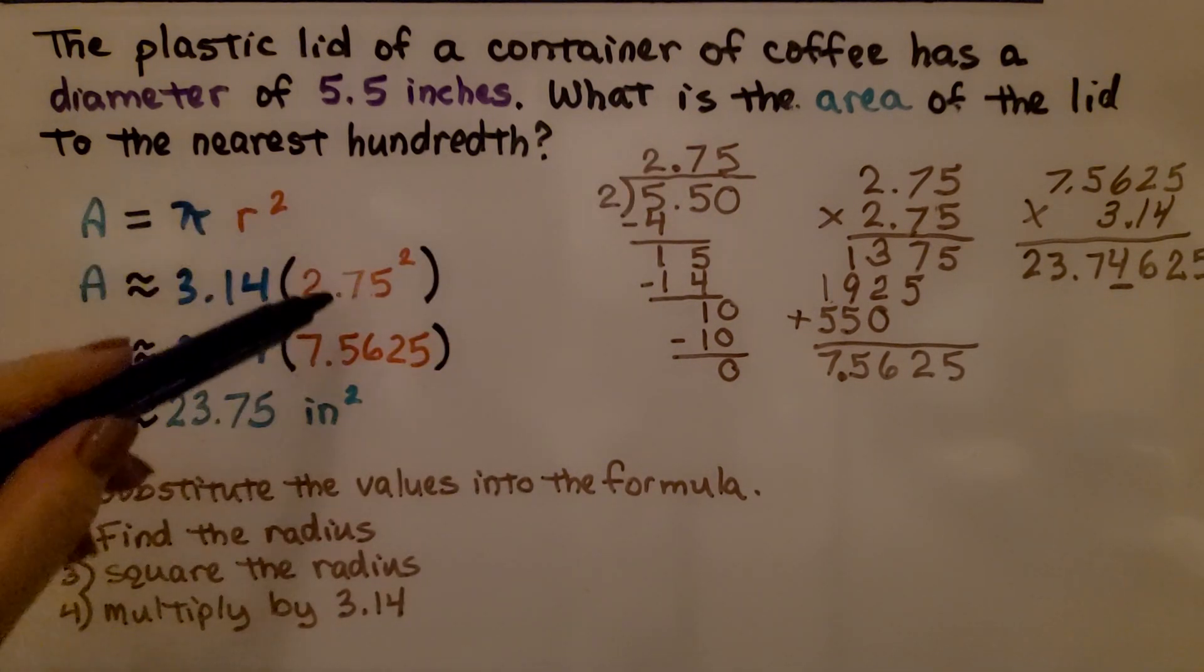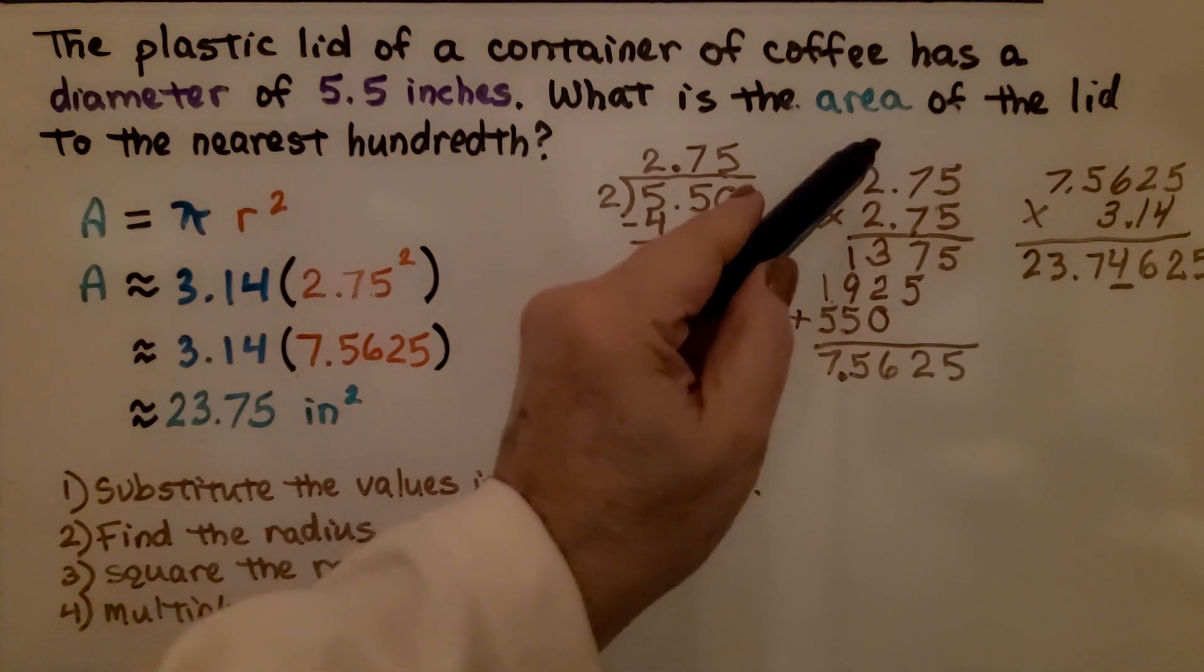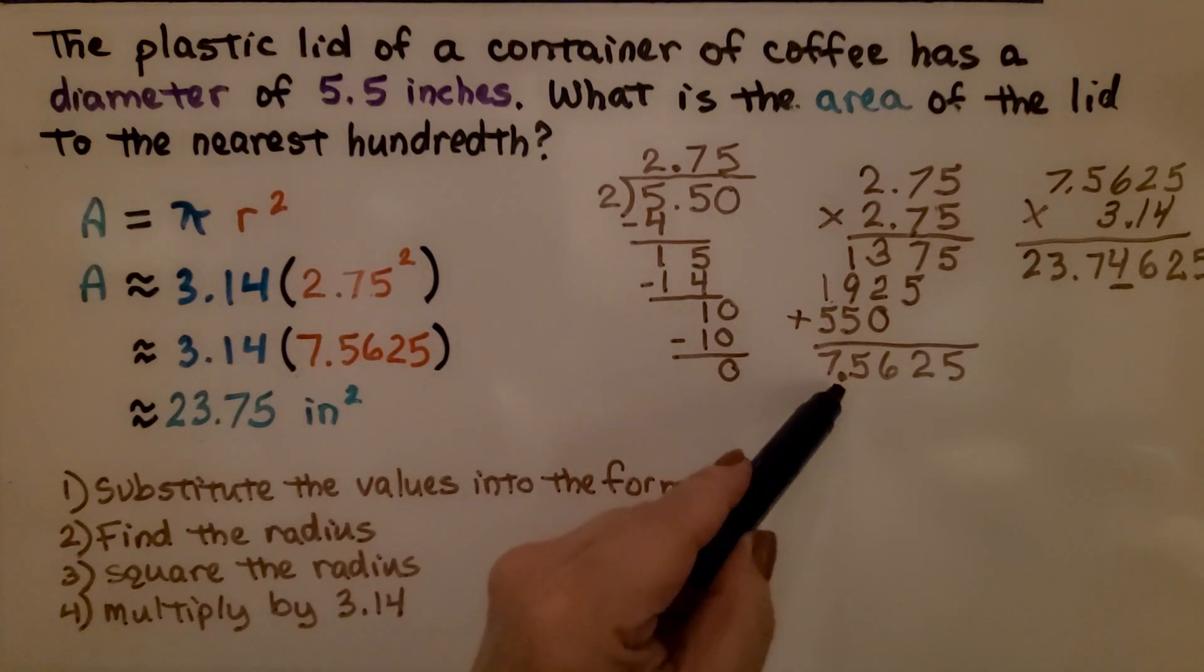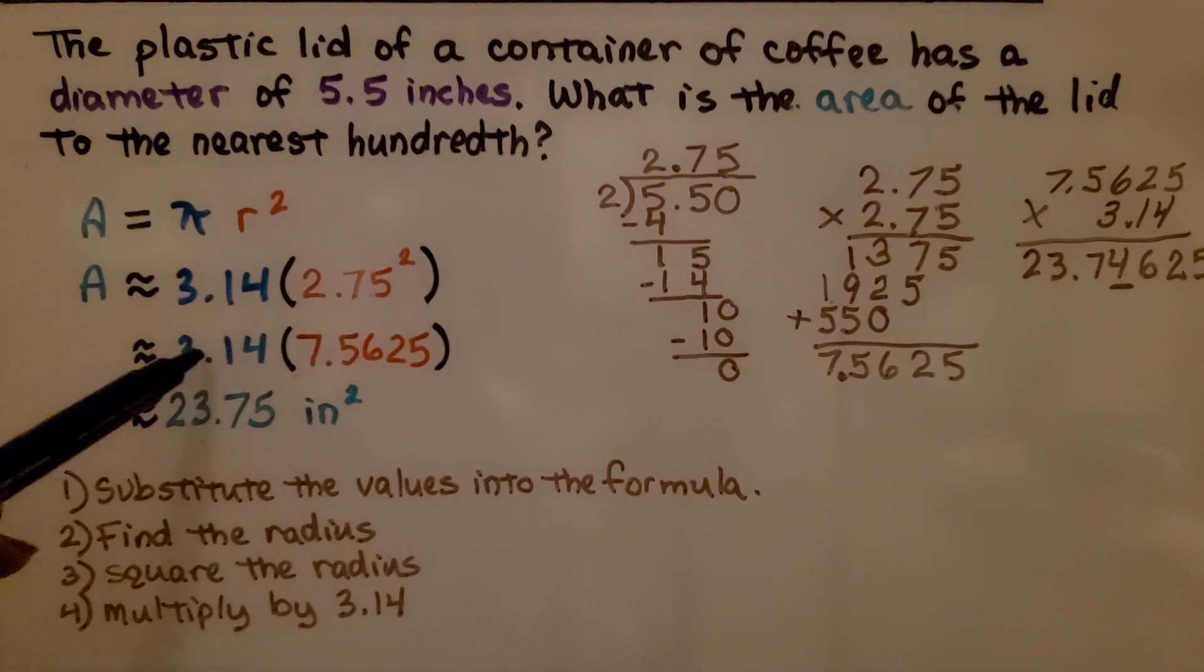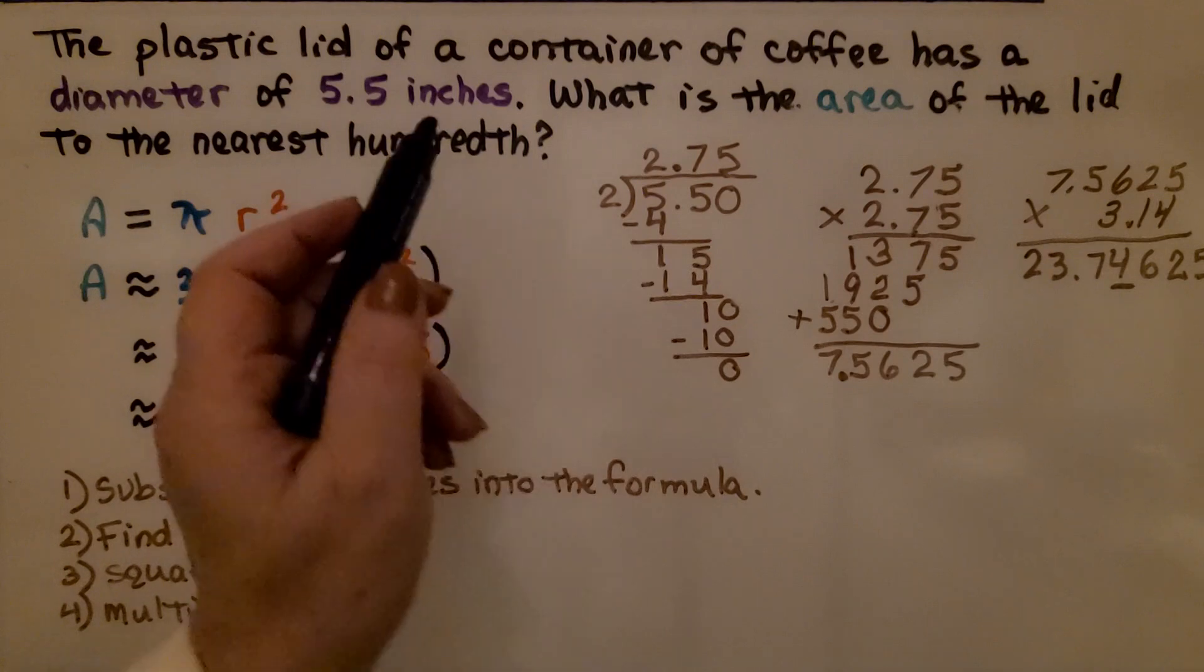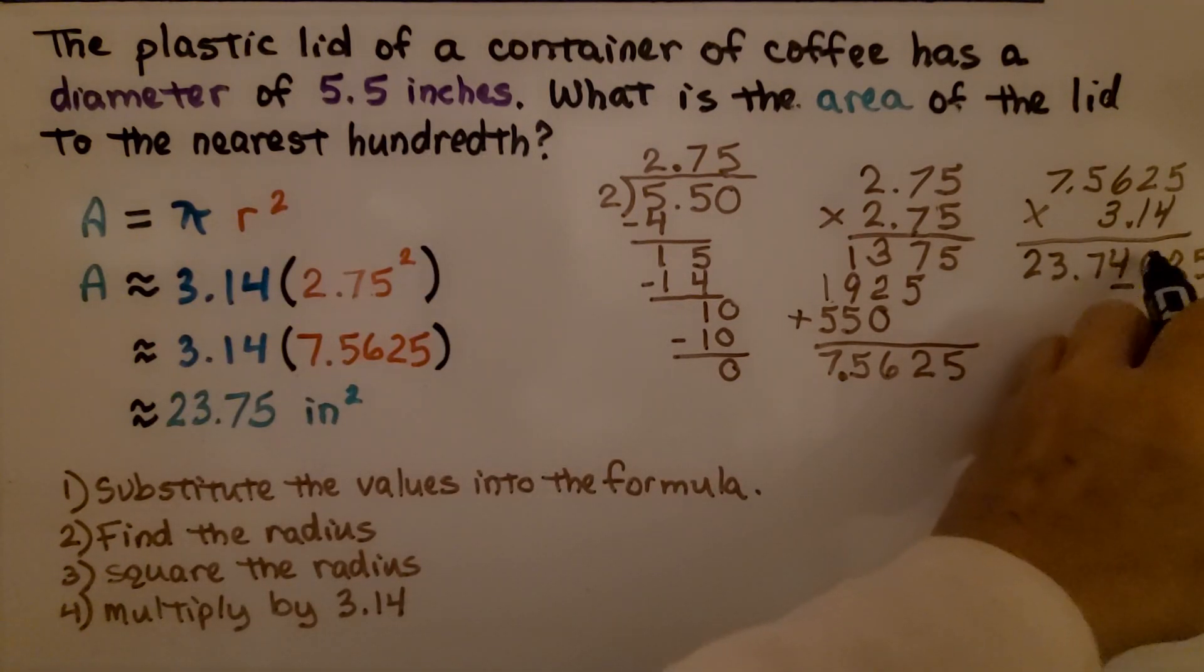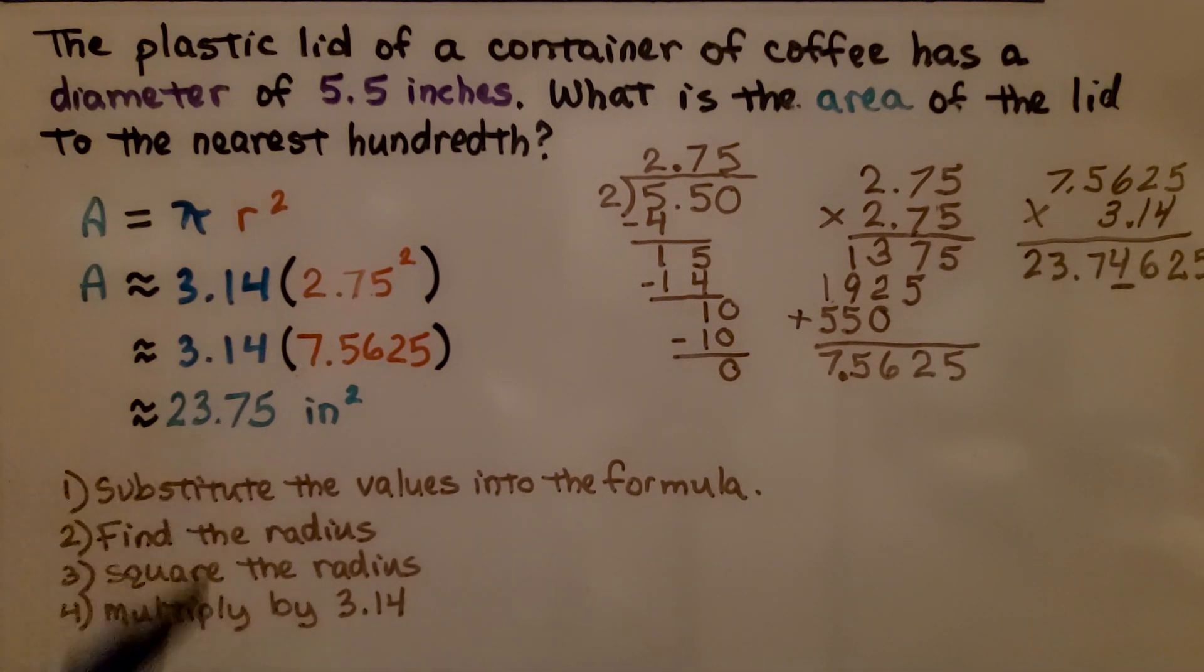So now we can do radius squared. We have 2.75 squared. We multiply 2.75 times 2.75 and we get 7.5625. Now we need to multiply that by 3.14. And I decided to do it on a calculator because there's quite a few steps here. So it's to the nearest hundredth. Well, that would be the 4, and this 6 is telling the 4 to round up. So we're going to round it up to a 5. We have 23.75.